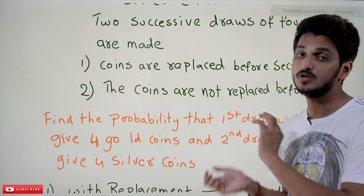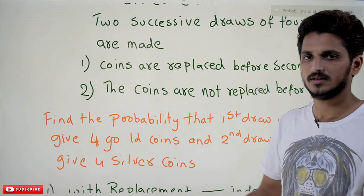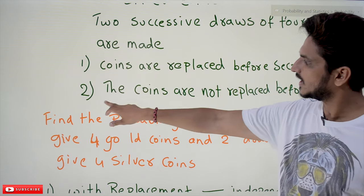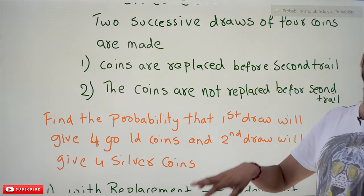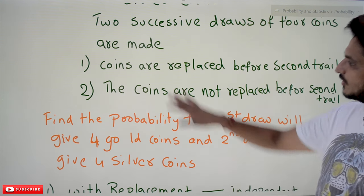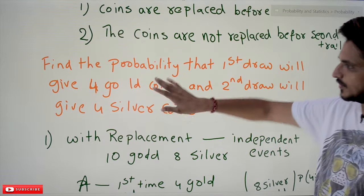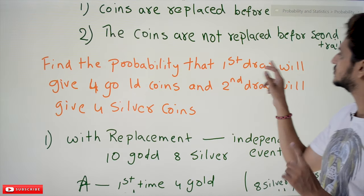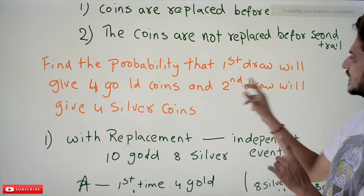They are asking two questions. First condition: coins are replaced before the second trial — first time we selected four coins and we put those coins back in the bag. Second condition: coins are not replaced back in the bag. We have to apply probability for both conditions and find the probability that the first draw gives four gold coins and the second draw gives four silver coins.